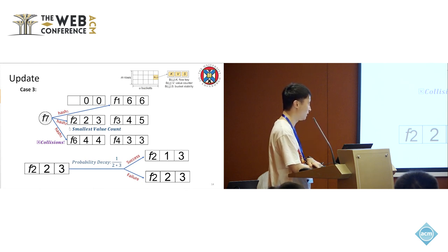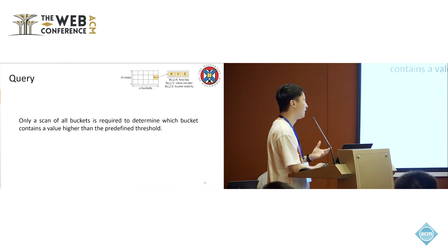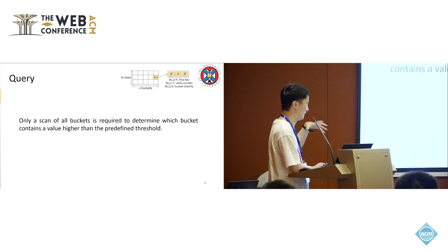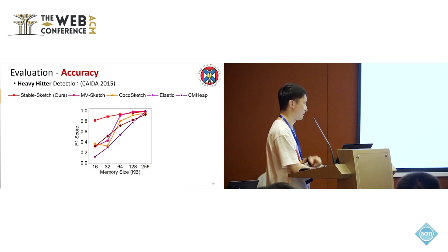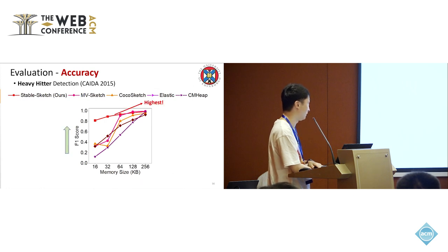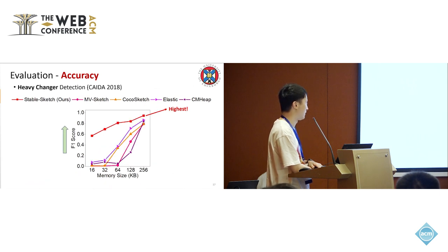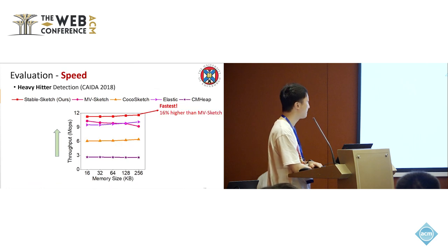To find heavy hitters — those large flows — it's pretty easy. We do a simple scan of all buckets to find which items' frequency counter exceeds the threshold. We conducted evaluations on different datasets, and our method achieved the highest F1 score even under a limited memory budget. For heavy changer detection, our method also achieved the highest F1 score, and achieved fast update speed, 60% higher than the state-of-the-art MVSketch.